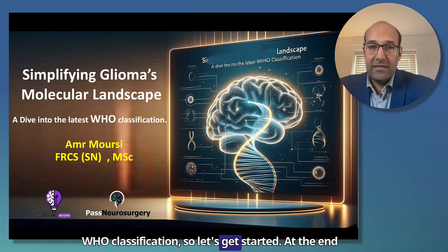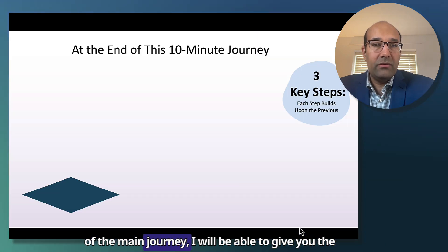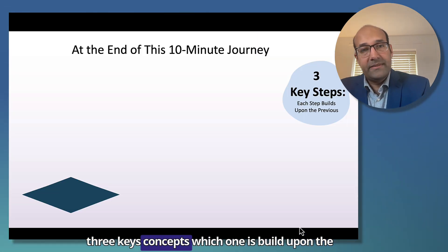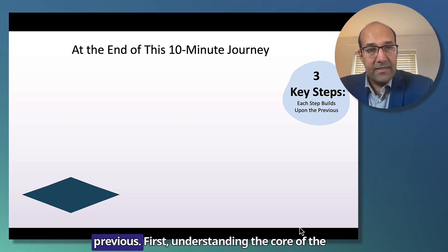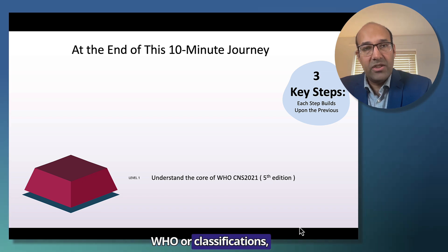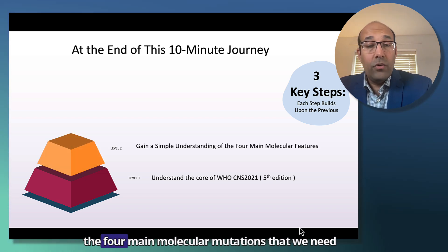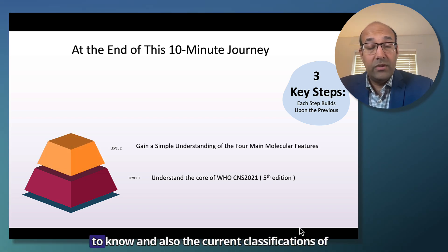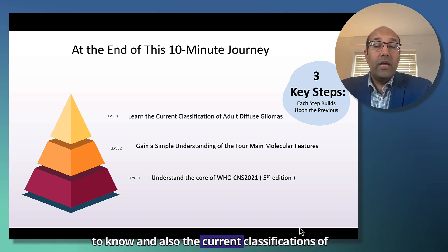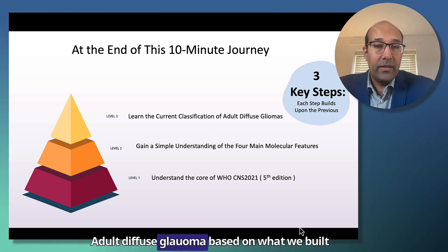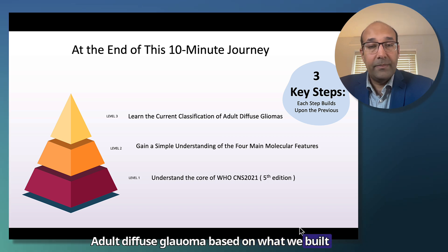So let's get started. At the end of this journey, I will be able to give you three key concepts, each one built upon the previous. First, understanding the core of WHO classifications; the four main molecular mutations that we need to know; and also the current classifications of adult diffuse glioma based on what we built before.